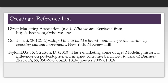Once you have all of your citations, you can create your reference list, which will go at the end of your paper. You want to make sure your references are in alphabetical order and that they each have a hanging indent, so that the first line of each citation is longer than the subsequent lines. Your reference list should also be double-spaced, and the top of your page should say 'References.'